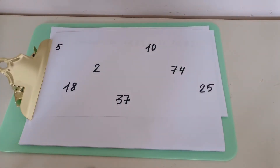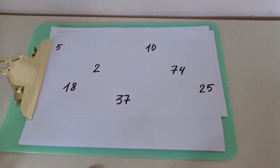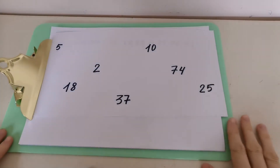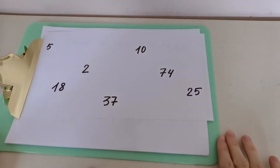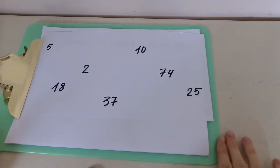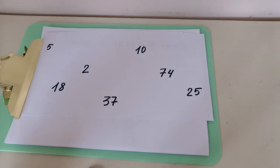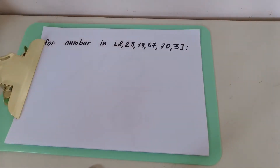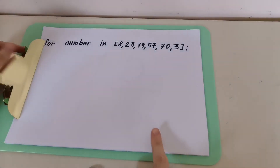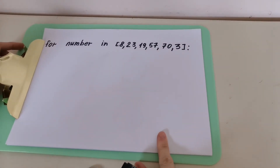And 25 — 25 is less than 74, so the winner, the largest value, is 74. How can we do that in Python when we are programming? How can we find the largest value in a list? Let's see, using the same list as before.